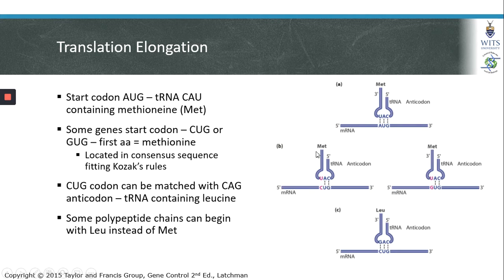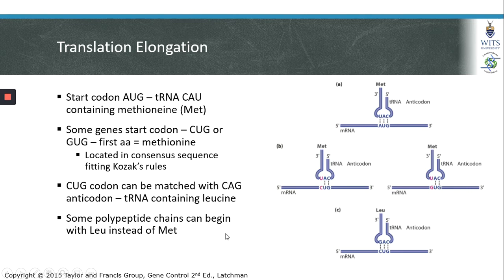In these genes, a transfer RNA containing methionine or CAU can still bind to the start codon. This is due to the fact that the CUG or GUG sequence is located within the consensus sequence that fits Kozak's rules. However, in some cases the amino acid corresponding to a start codon with CUG instead of AUG would be CAG, which corresponds to leucine. Therefore some polypeptide chains can begin with a leucine instead of methionine. For the purpose of our lectures, we will always consider AUG and methionine as the start codon and initiator transfer RNA.